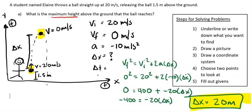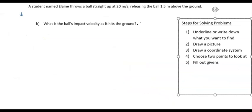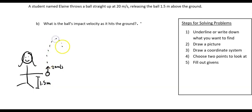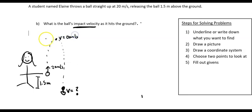We're going to do one more problem — Part B. I'm going to draw a fresh picture. We still have Elaine, throwing the ball at 20 meters per second, starting 1.5 meters above the ground. The ball goes up in the air and then it comes back down. We want the ball's impact velocity. From the last part I know the velocity at the top is 0 meters per second, and that distance is 20 meters.